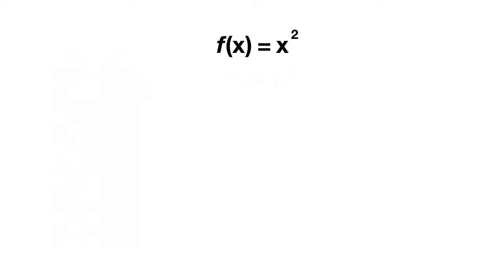But using f of x, it's much simpler. If you want to figure out what this function equals when x is one, you just write it as f of one. Now what this means is anywhere on your function you see an x, you need to substitute it with a one. So here, f of one is equal to one squared, or it just equals one.